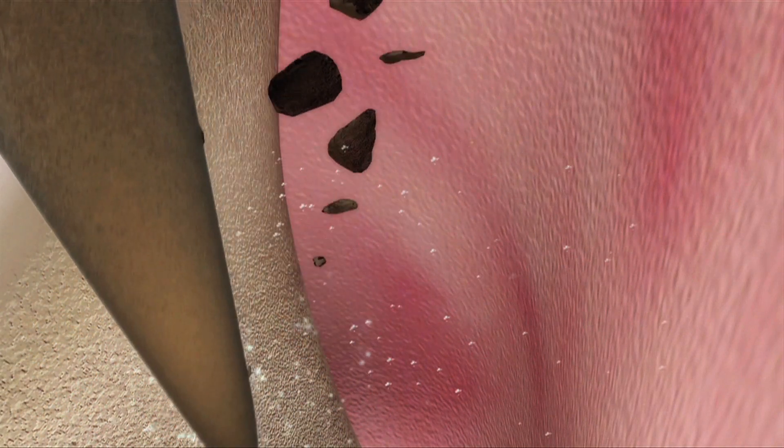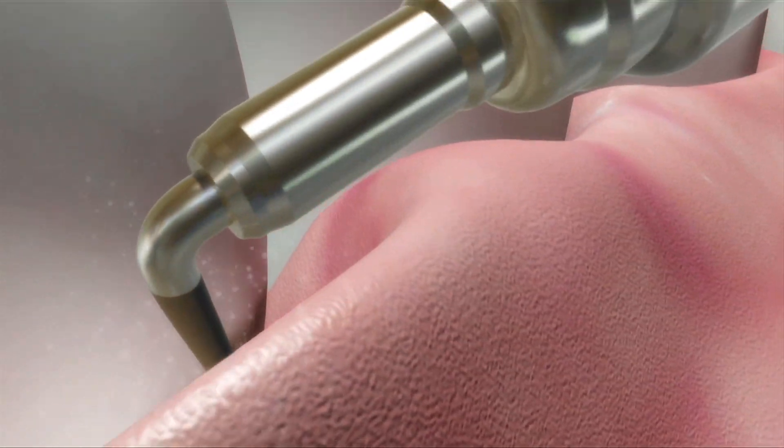Now we go back over the root surface very lightly with a piezo scaler, using a side-to-side motion from the top to the bottom of the pocket, just to confirm all the calculus is removed. Thorough removal of the calculus is crucial to good healing results.